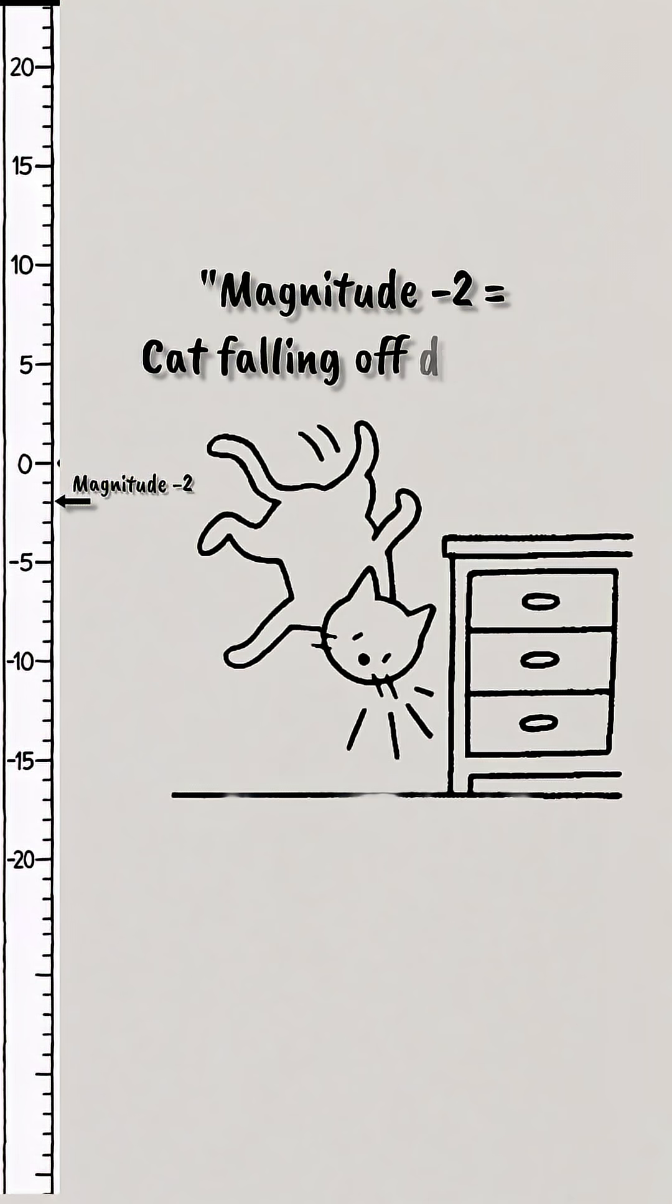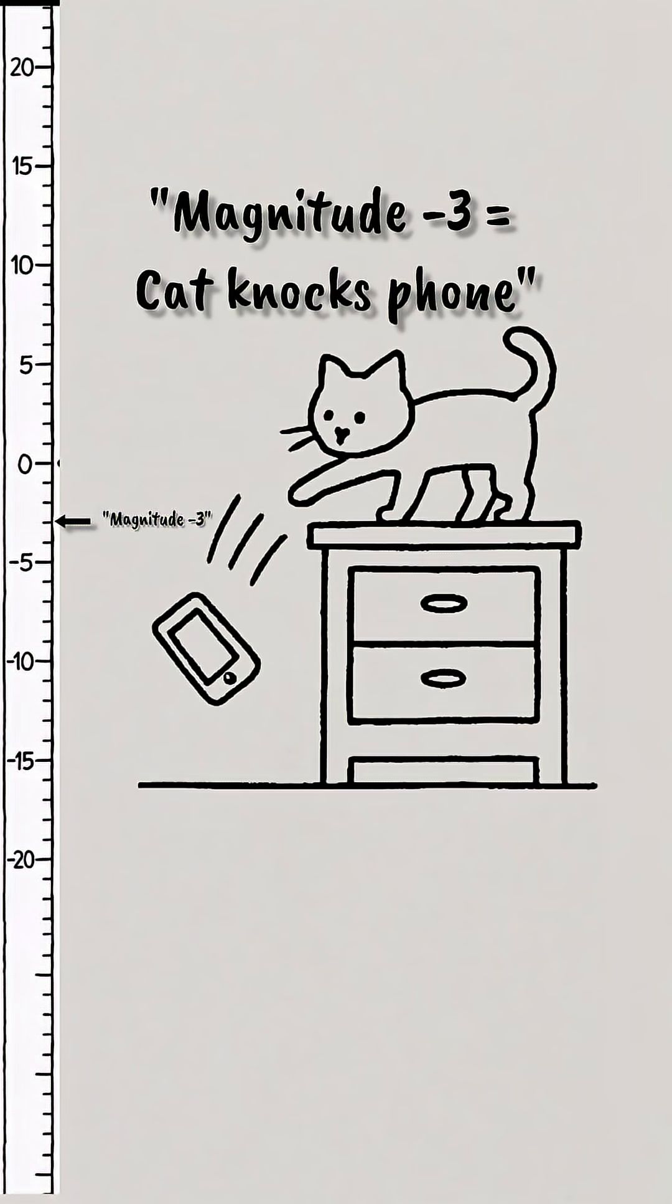A cat falling off a dresser would have a magnitude of negative two. A cat knocking your cell phone off your nightstand would have a magnitude negative three.